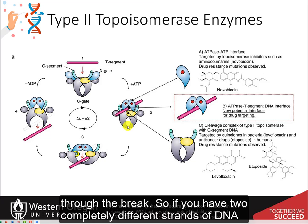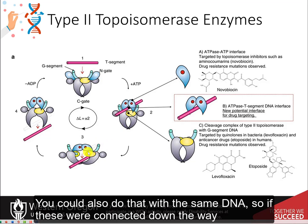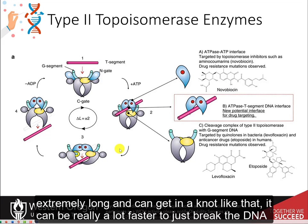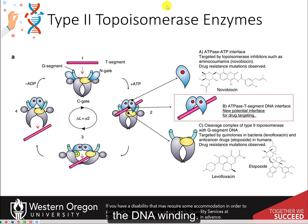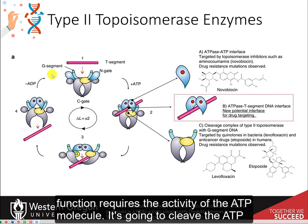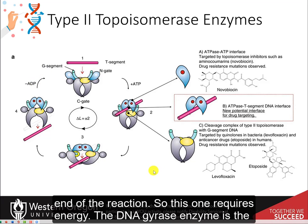If you have two completely different strands of DNA, you could pass one strand through the other and then reseal. You can also do this with the same DNA molecule — if these were connected further down, you could pass the entire strand through and then reseal the break. For molecules that are extremely long and can get in a knot, it can be much faster to just break the DNA and pass it through to fix that knotting. This process requires ATP: the enzyme cleaves ATP to release enough energy to mediate the cut in the fragment, then releases ADP at the end of the reaction.